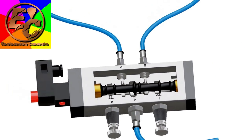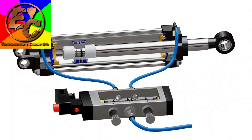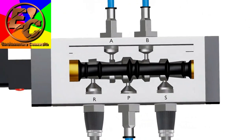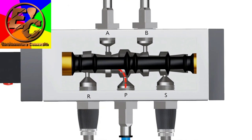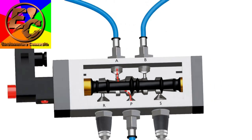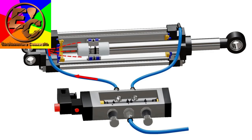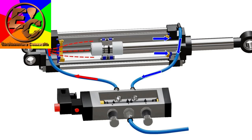Now let's understand how a pneumatic cylinder works. Compressed air is supplied through inlet port P of the valve. The valve directs air to a particular direction, which we can observe in the animation. In this case, the air is directed to port A. This high-pressure gas is then transferred to the cap end of the cylinder through the pneumatic hose, creating high pressure that pushes the piston towards the head end, which also pushes gas out from the head end.